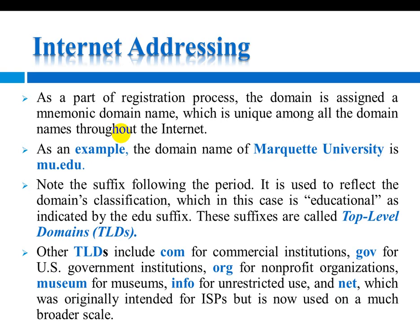As an example, the domain name of Market University is MU.edu. It is used to reflect the domain classification, which in this case is educational as indicated by the .edu suffix. These suffixes are called top-level domains. Common suffixes include .edu, .com, and .org.